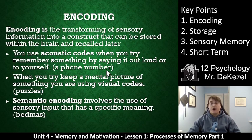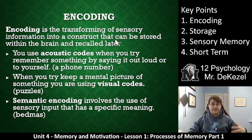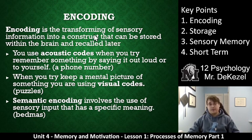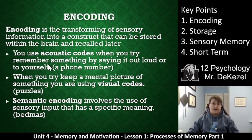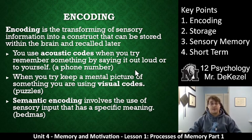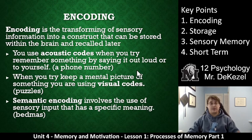Key point one is encoding. Encoding is transforming the sensory information that we talked about in unit 2.5 into something that can be stored within the brain. Not only do you need to sense it and perceive it, but you need to transform it into something storable. If you use your hearing to do that, that would be an acoustic code — like when you say a phone number or someone's order at Subway several times out loud.